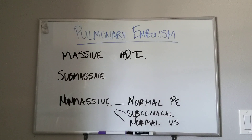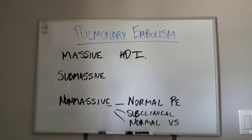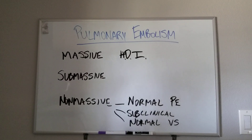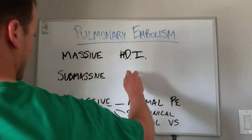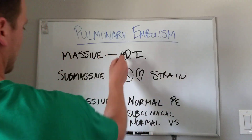Submassive is the one that people screw up the most, especially new interns. What this means is there's evidence of right heart strain seen on different diagnostic modalities. The pulmonary embolism is in the lungs and it's preventing the pulmonary artery coming from the right ventricle from getting blood there effectively — causing a clog in the system, causing pressure to back up. Normally the right heart is a pretty low-pressure system, but if you stress it, you can show signs of right heart strain, which is what defines a submassive PE.